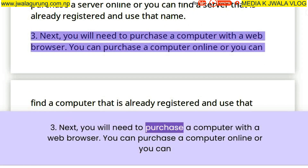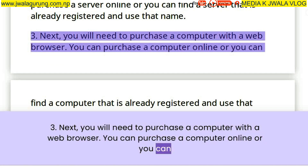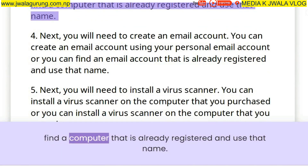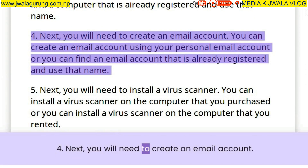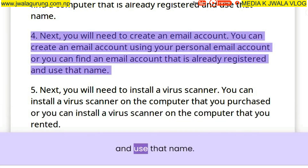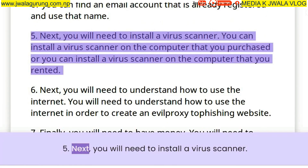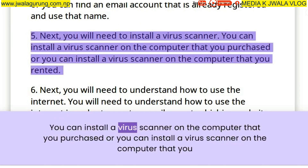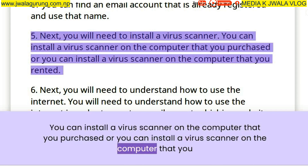Next, you will need to purchase a computer with a web browser. You can purchase a computer online or you can find a computer that is already registered and use that name. Next, you will need to create an email account. You can create an email account using your personal email account or you can find an email account that is already registered and use that name. Next, you will need to install a virus scanner on the computer that you purchased or rented.